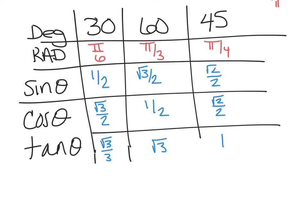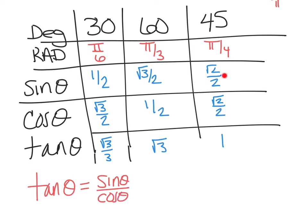Some other things we should have memorized: tangent theta is equivalent to sine theta over cosine theta. One quick way to think about this - if I said sine of 45 divided by cosine of 45, anything divided by itself should be 1.